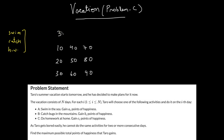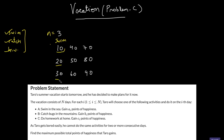This problem states that you'll be given N days. You have three days and every day you can perform one of three tasks: swim, catch, or homework. If you perform swim, you get 10 points on the first day, 20 on the second, and 30 on the third. If you perform catch, you get 40, 50, 60. And if you perform homework, you get 70, 80, 90.